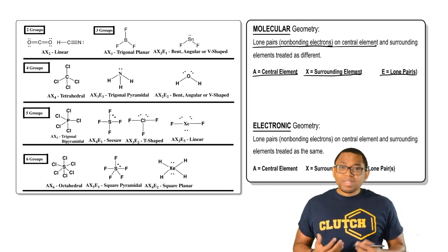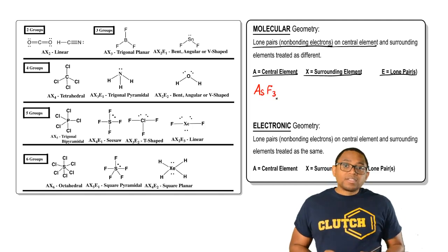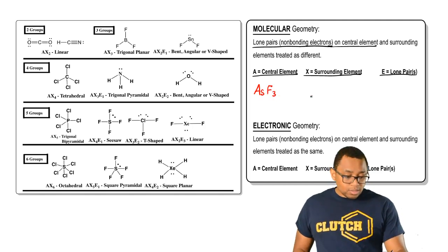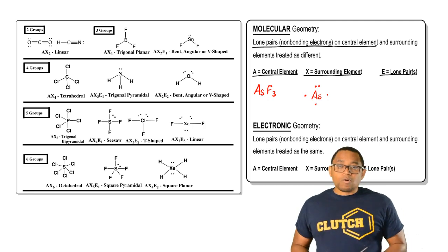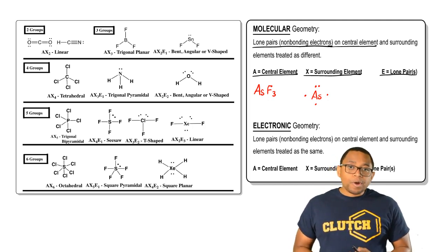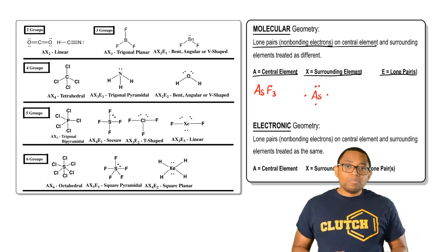For example, if we're drawing AsF3, arsenic is in group 5A, so it has five valence electrons. Fluorine, remember from the rules we've talked about in the past, fluorine is in group 7A, it's a halogen. Halogens only make single bonds when they are not in the center, and fluorine never goes in the center.